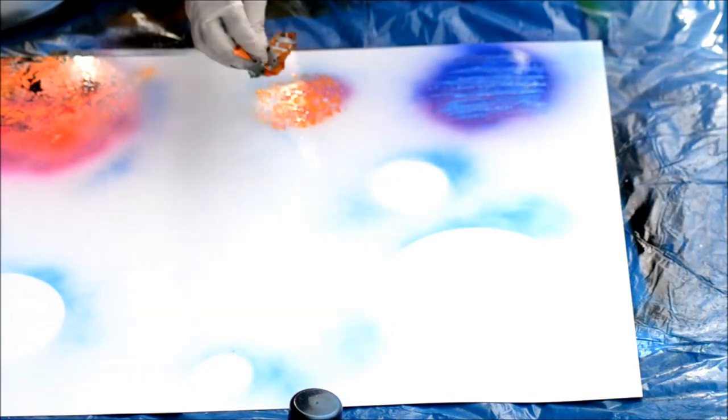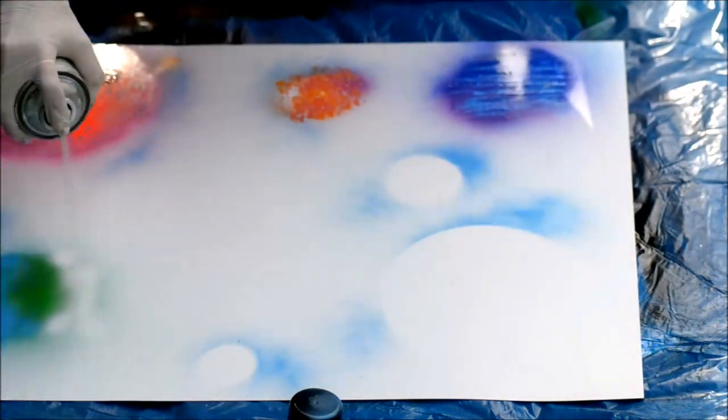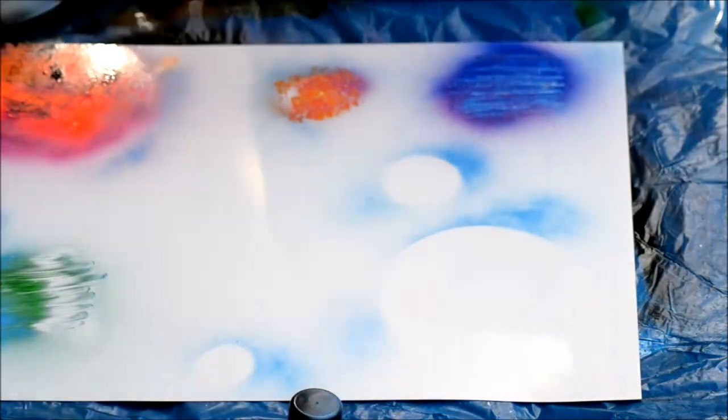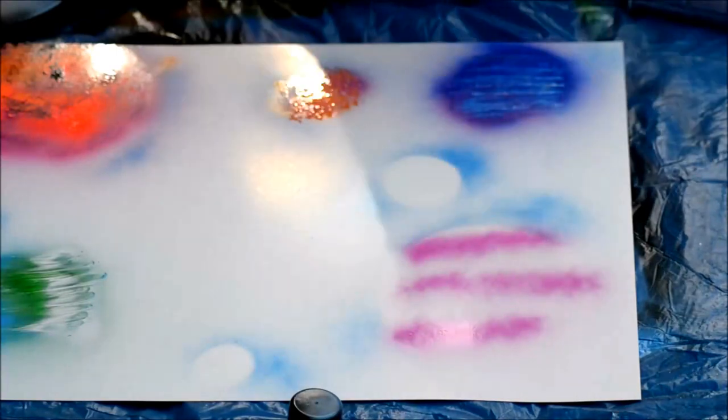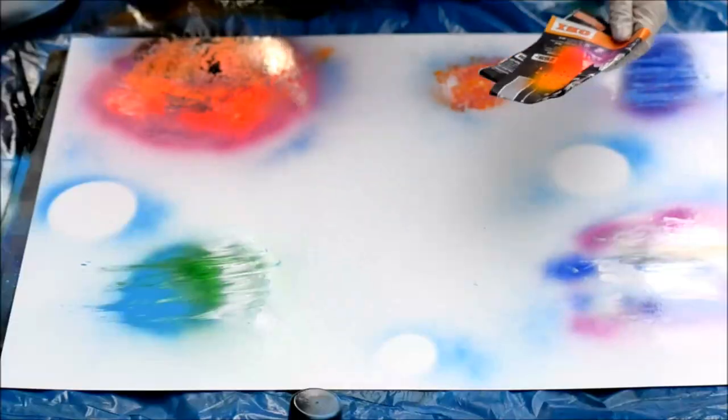Crumple a paper to make a texture. Use your fingers to make stripes. Unpull the paper on the board.